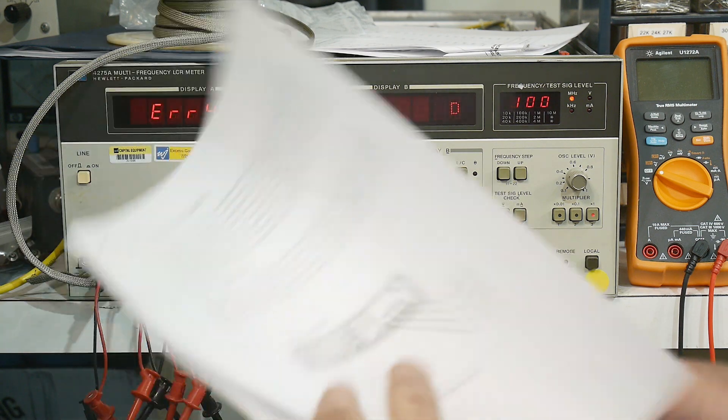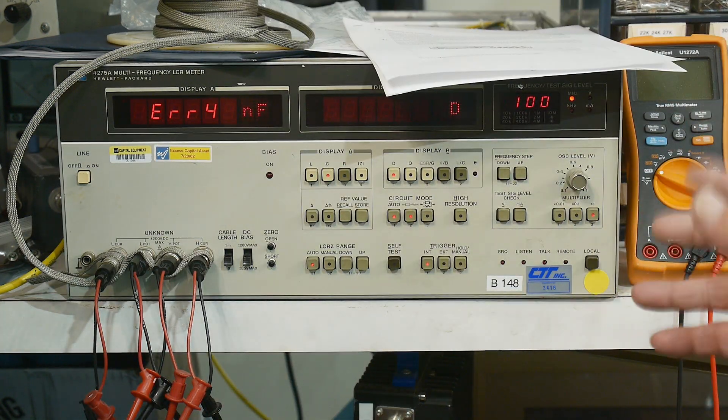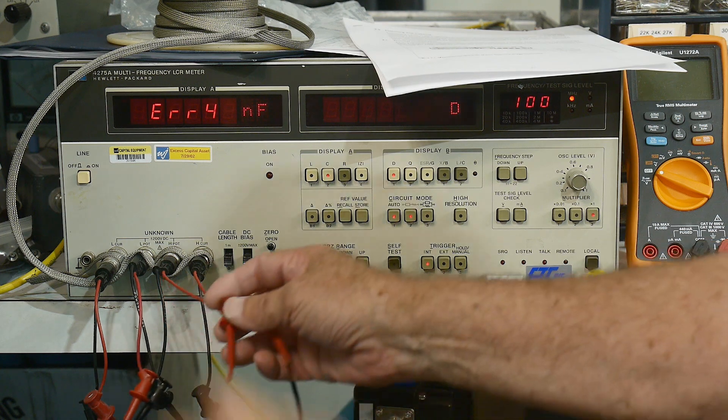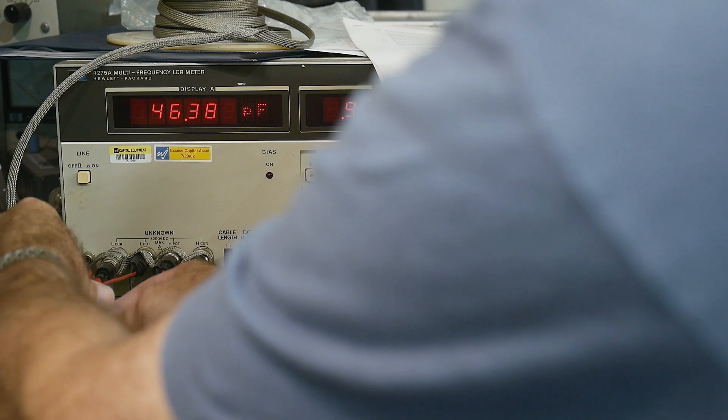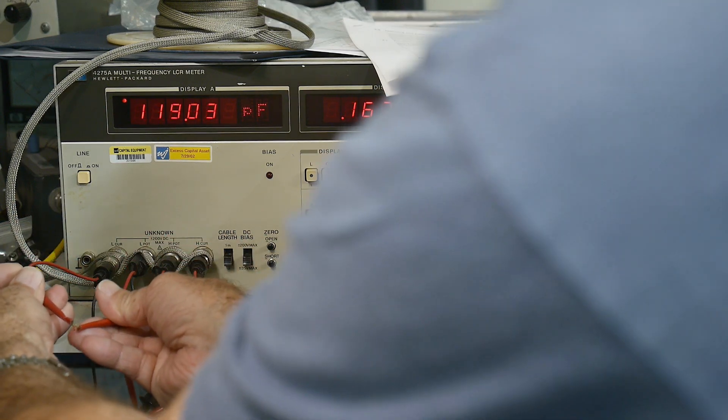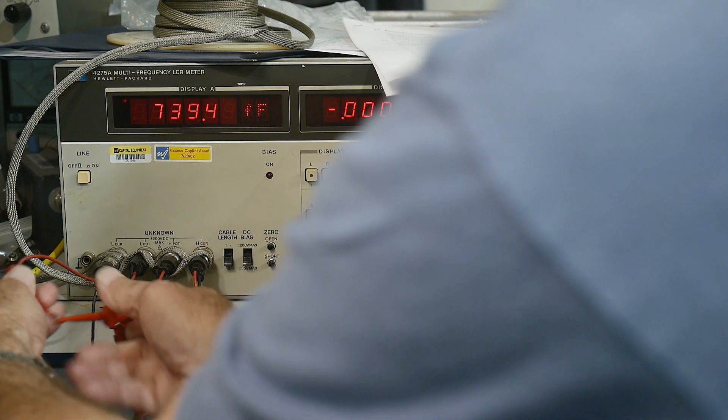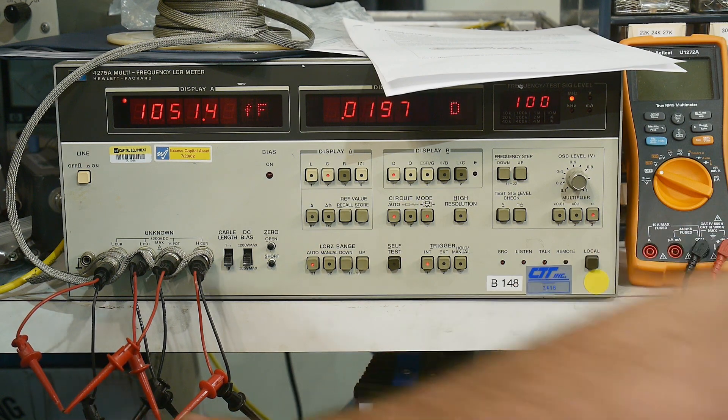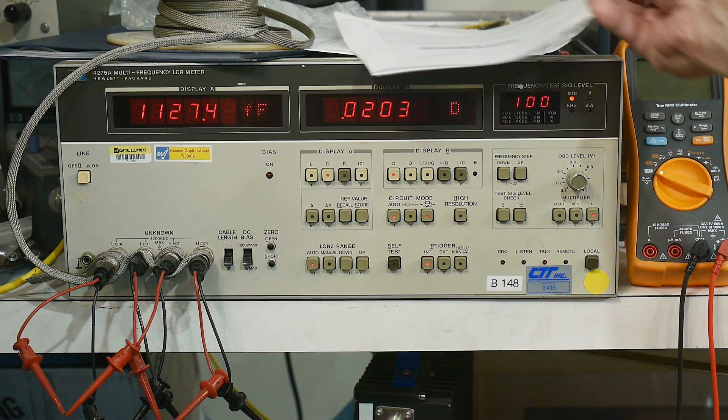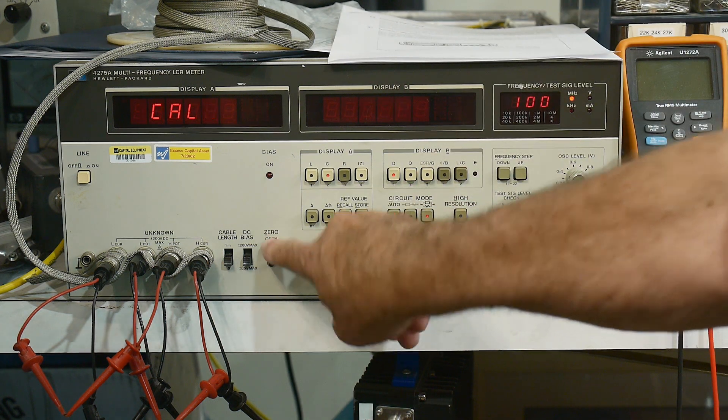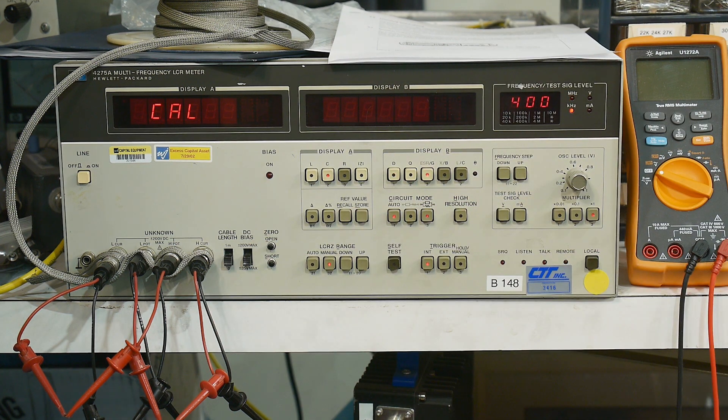The way these things work is it is still Kelvin, so you have a source and a sense and a source and a sense, and then you'll put the device between the two. When there's no device between the two, that's an open condition. If I hit the open, it actually will now complete the calibration. Before it wasn't, but now it actually completed the calibration.